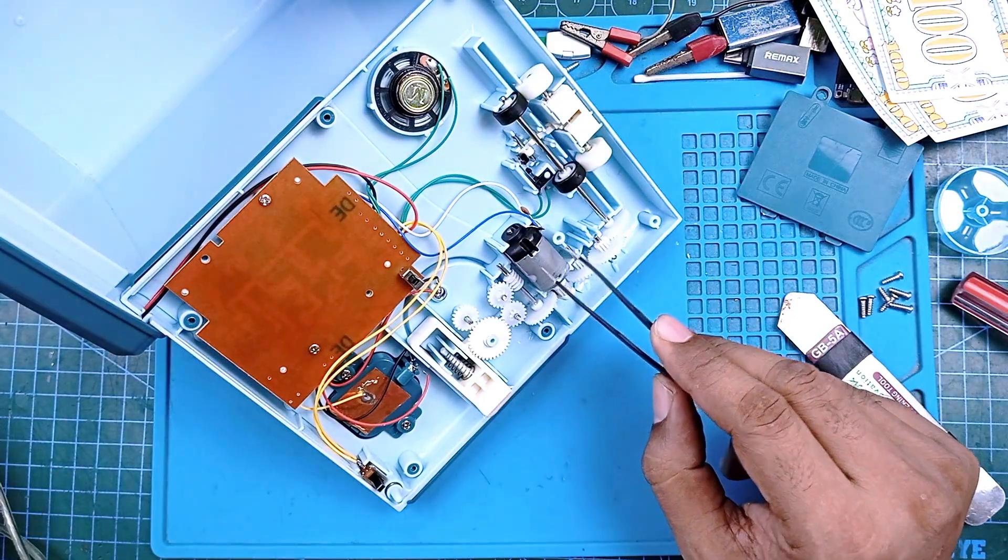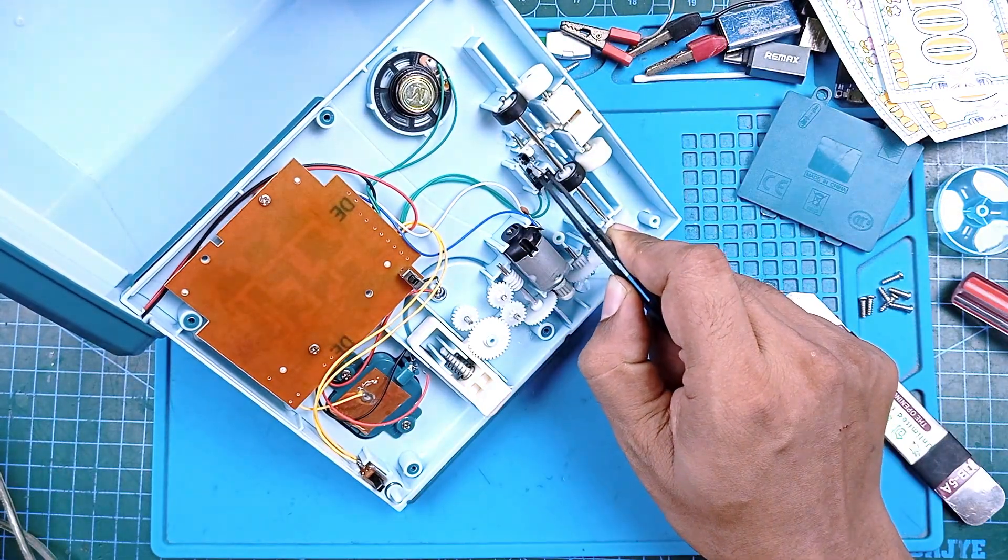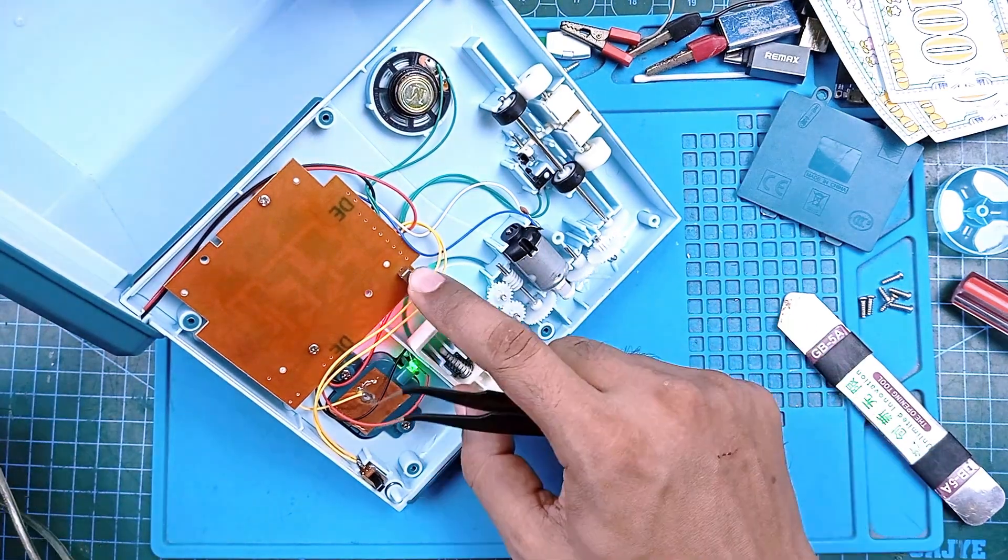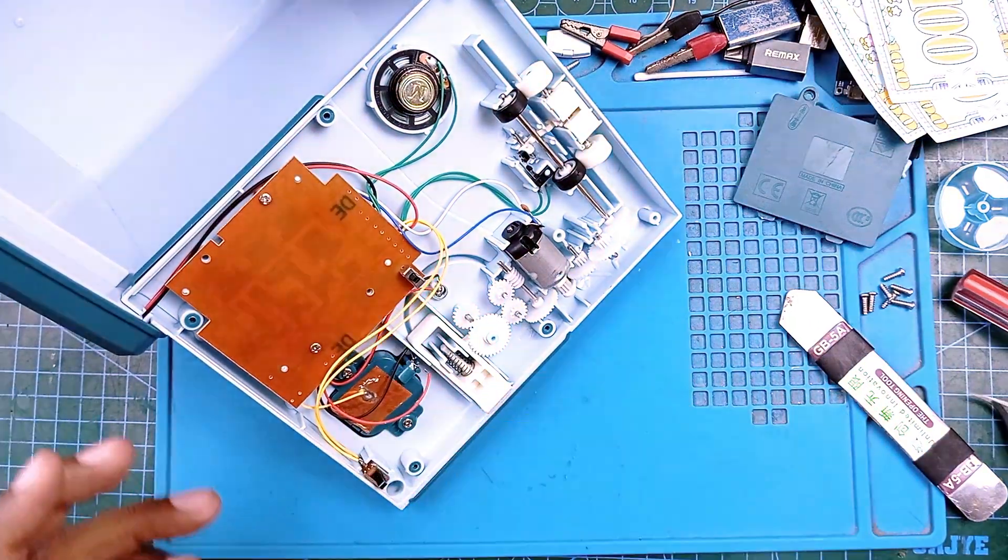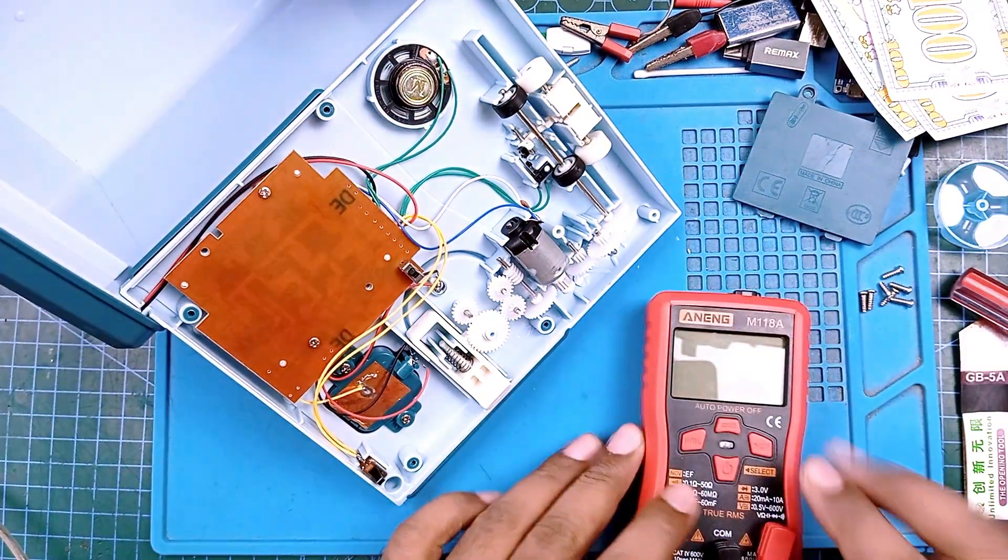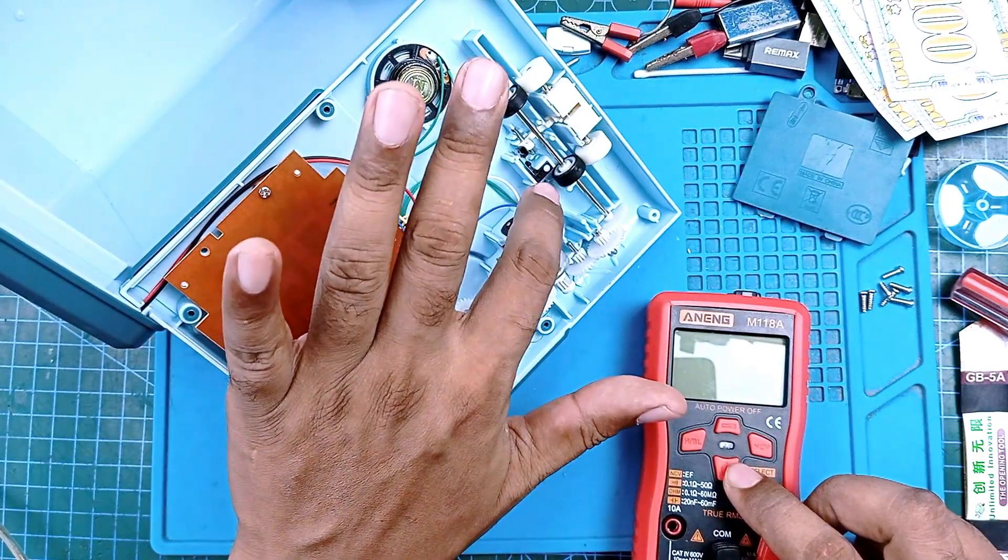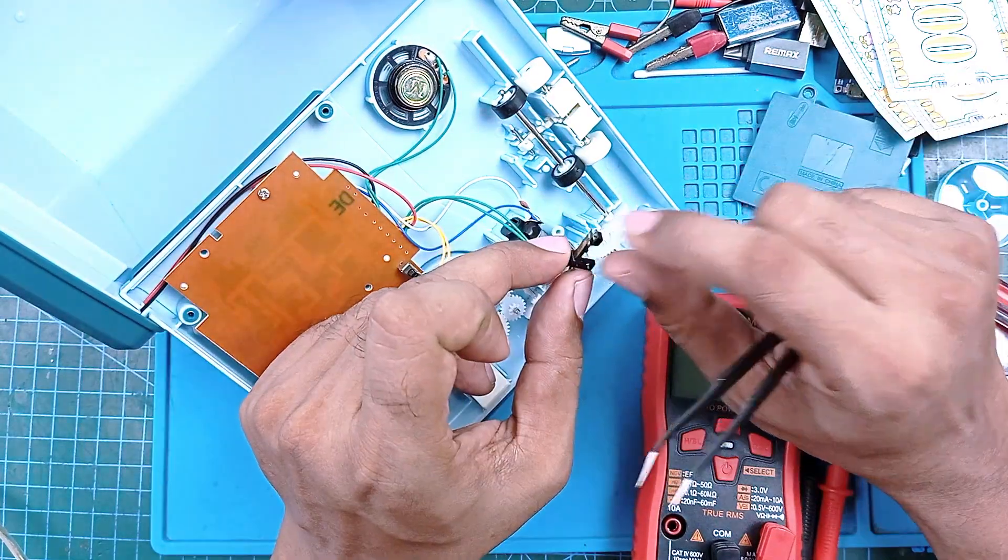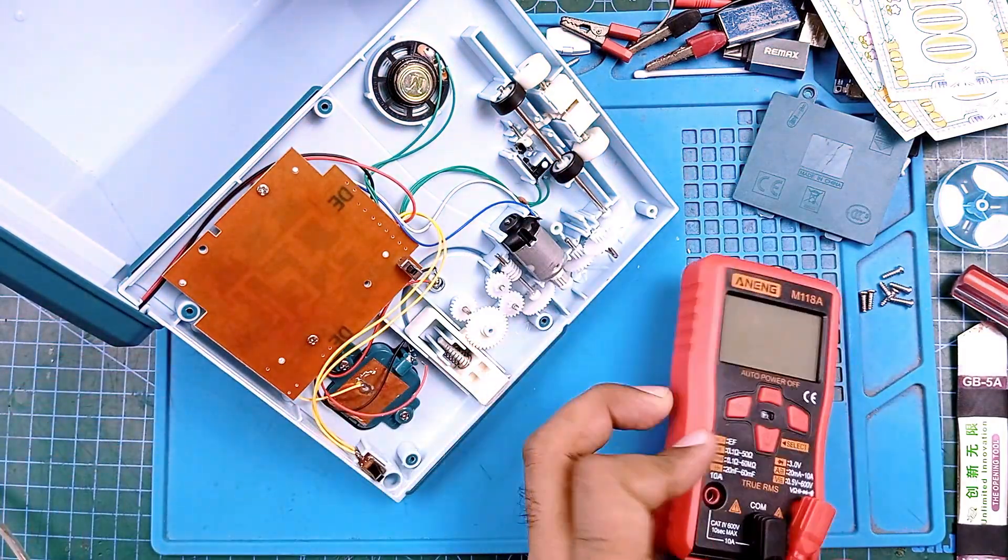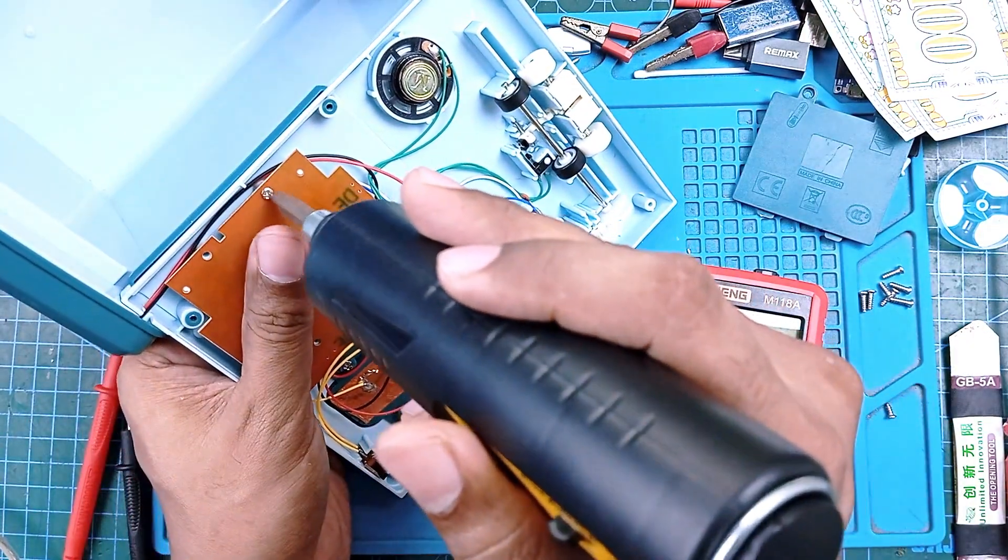This motor should run when this switch is triggered but it runs continuously. I don't know, so we have to check if this switch is short somehow. Looks like there is no short circuit, so we have to open the board and see what's the problem.